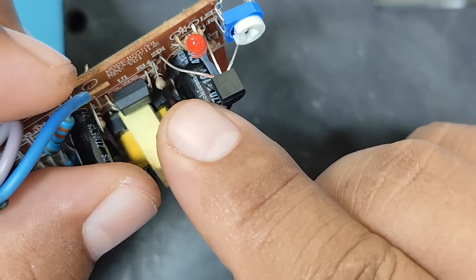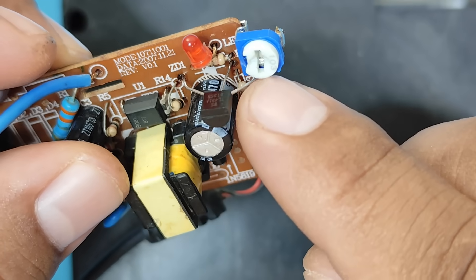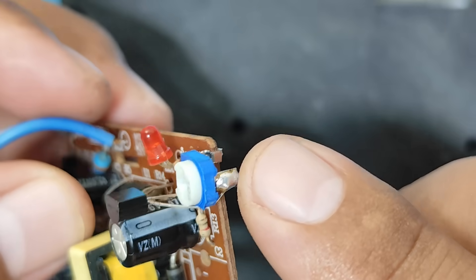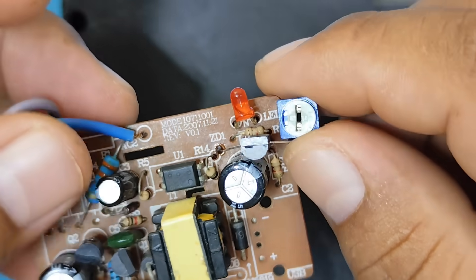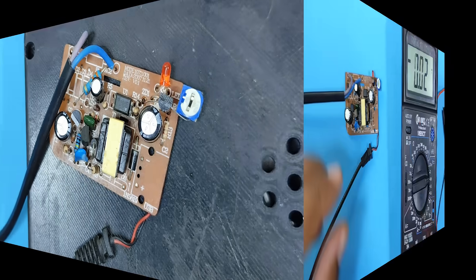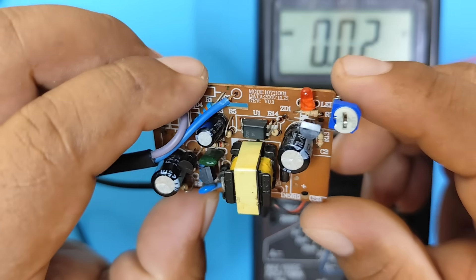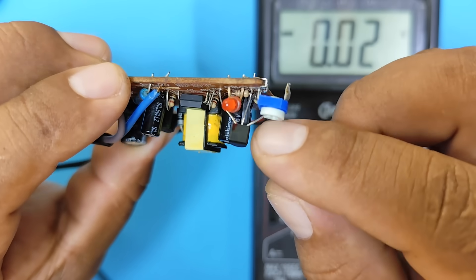Here we have the cathode, the anode, and the reference pin goes to the center pin of the trimmer. Ok, let's test it. Ok, our circuit is complete. There you can see the TL431.